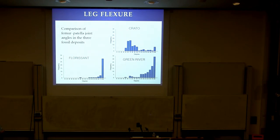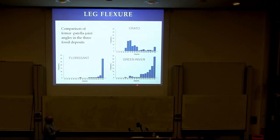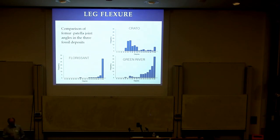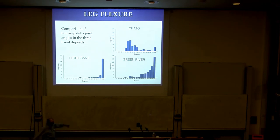So what we did first of all was go back to the fossils and measure the angles of the legs to see if we could show that this was really the case, not just a casual observation. This is the comparison of the femur-patellar joint angles in the three fossil deposits. Florissant — nearly all of them are spread out at large angles. Crato — they're all clustered down here, all curled up. Green River is a bit more diverse but tends to be mostly spread out.